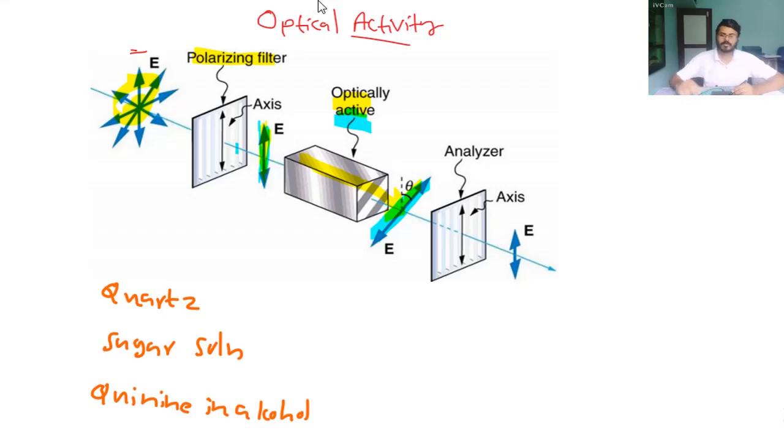Depending on the sense of rotation, we can have two types of optical activities. The first one is dextrorotatory and the second one is levorotatory. If the plane of polarization gets turned or rotated towards the right, when viewed against the direction of the light, then the optical rotation is called dextrorotatory.